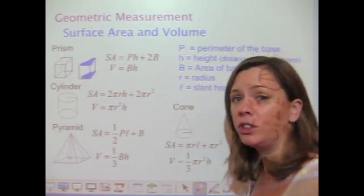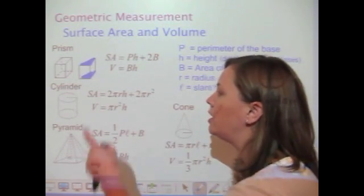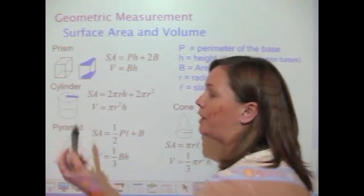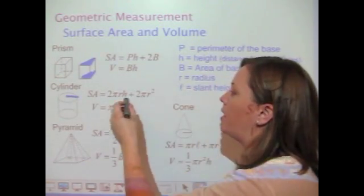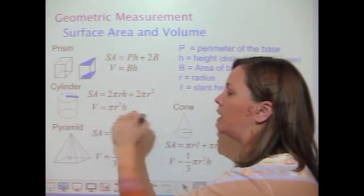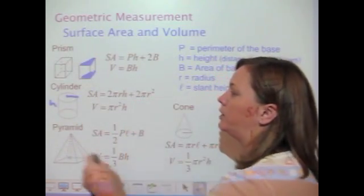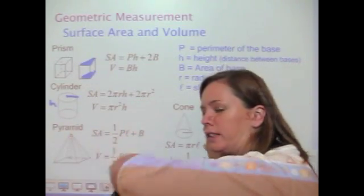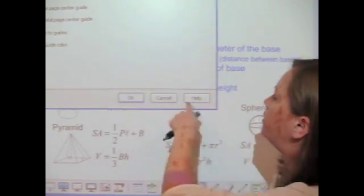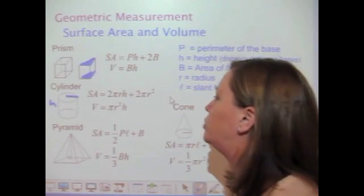In a cylinder, there's only two variables that you have to worry about: the radius, which is the radius of the circle on top, and then the height. The surface area is 2πr times the height plus 2πr². So we're adding together the area of the sides plus the area of the two circles — the top and the bottom.